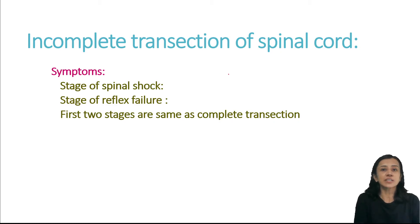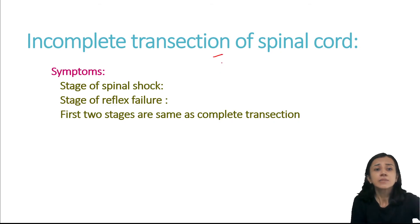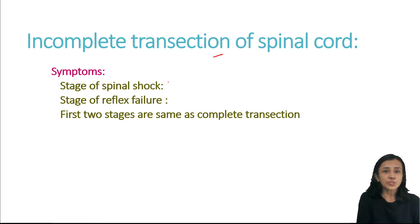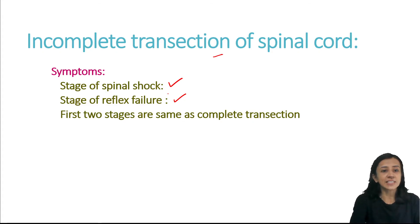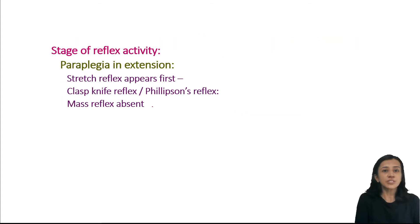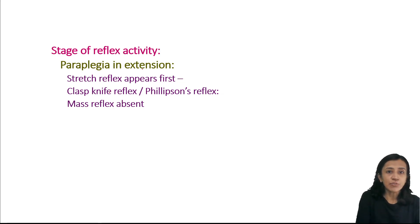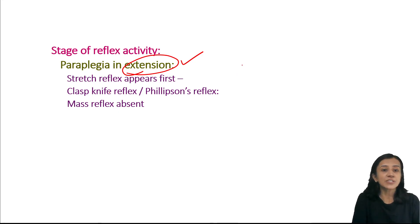The second type is incomplete transection of the spinal cord, where only part of the cord is transected. In incomplete transection, the first and third stages — spinal shock and reflex failure — are the same. However, the middle stage, the stage of reflex activity, is different. Here, there is paraplegia in extension, because tone returns first in the extensor muscles rather than the flexor muscles.